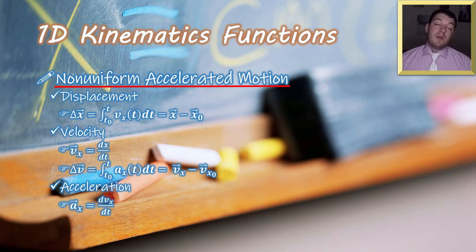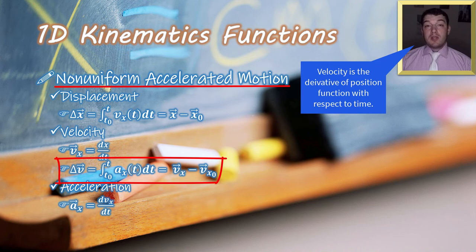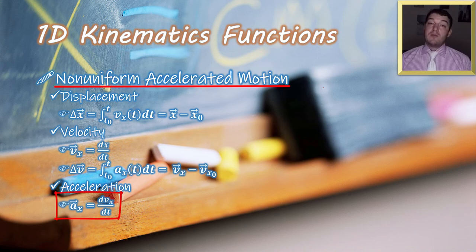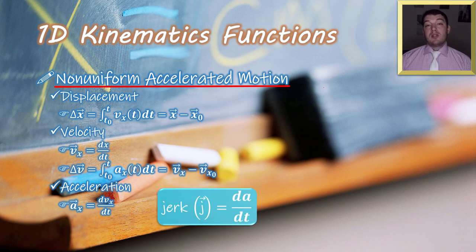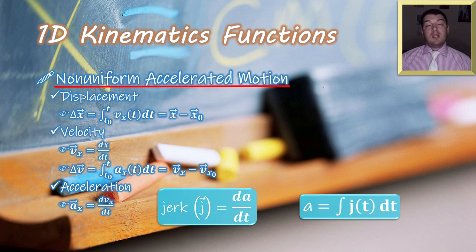When looking for velocity: if we have the displacement function, velocity is its derivative with respect to time; if we have acceleration, velocity is its integral with respect to time. For acceleration: it's the derivative of the velocity function, or equivalently the second derivative of position with respect to time. Since acceleration is not constant in non-uniform motion, its change can be described as a jerk — the derivative of acceleration with respect to time. Conversely, the integral of jerk with respect to time gives you acceleration.